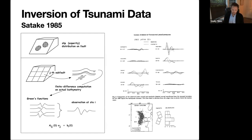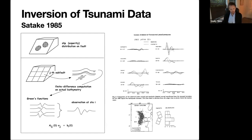There are three main problems with this approach, keeping in mind this was around 1985. First, computer power was limited, so the matrix size for the inversion was constrained. Personal computers had just started to take off and computing capacity was a bottleneck.